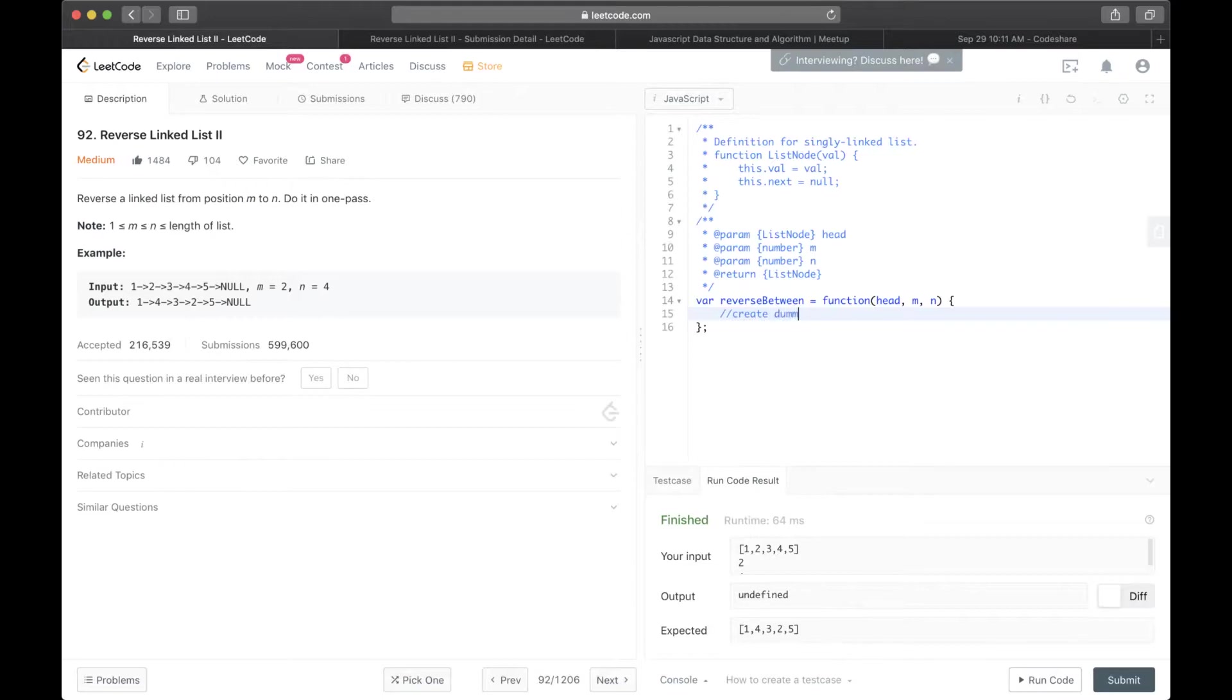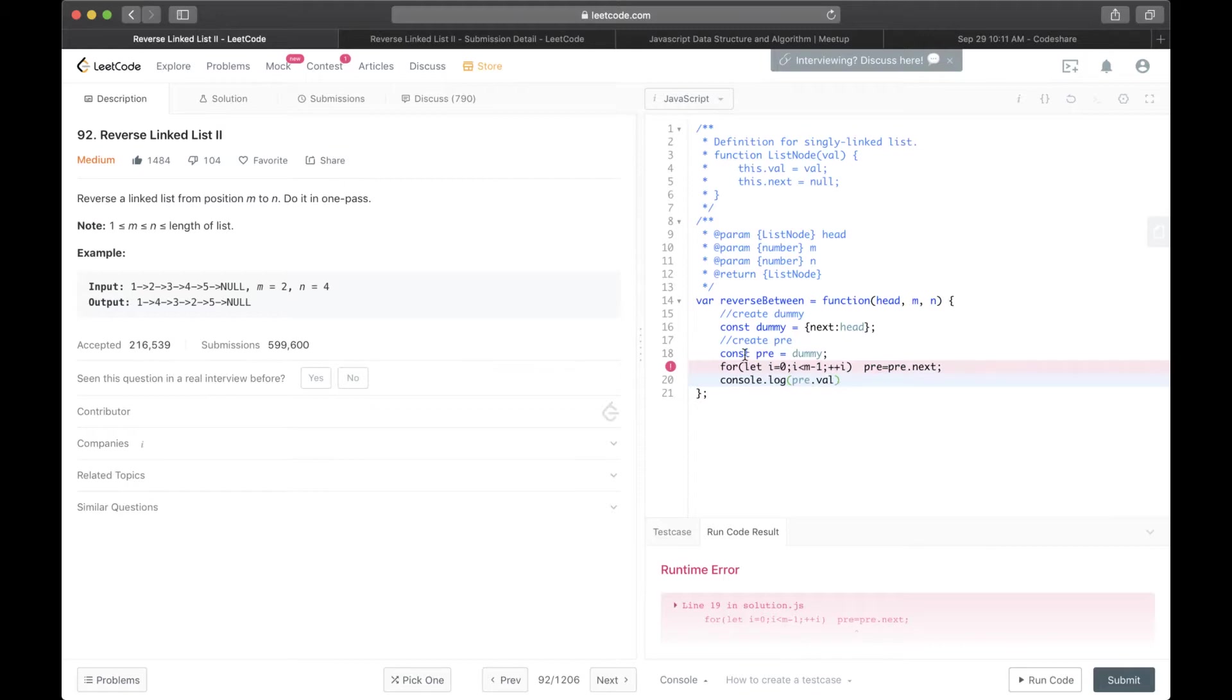So the first thing is create a dummy. So dummy is—the next of the dummy is the head. Then we create a pre. So pre will start off as dummy and we advance pre for m minus one times. So m minus one times you advance pre. Let us check. What is pre? So pre is one, that's correct. Because m is two, so the previous is one.